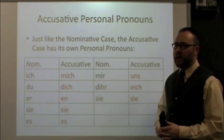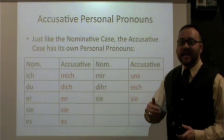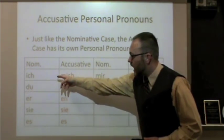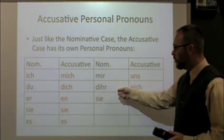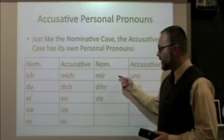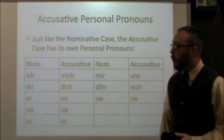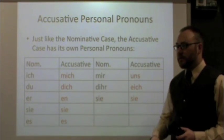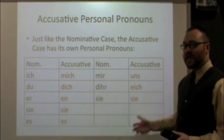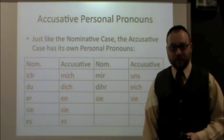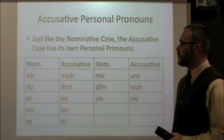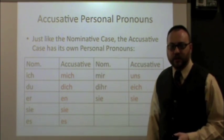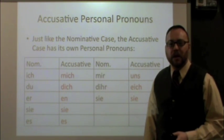In the nominative case, we learned about subject pronouns — I, you, he, she, it, we, you guys, and they: ich, du, er, sie, es, mir, dir, and sie. In the accusative case, we have a new set of personal pronouns, and we need to know these because they get used quite a bit and they do change a little from the nominative. The accusative for 'ich' is 'mich' (me). For 'du' it changes to 'dich.' For 'er' it becomes 'en.' 'Sie' and 'es' stay the same. 'Mir' changes to 'uns' (us), 'dir' changes to 'eich,' and 'sie' stays the same.